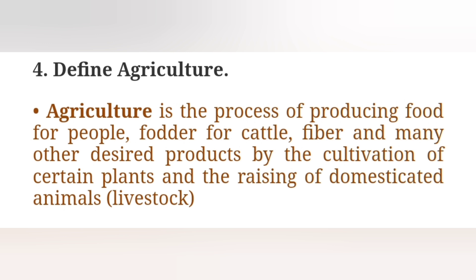Question 4: Define Agriculture. Agriculture is the process of producing food for people, fodder for cattle, fiber and many other desired products by the cultivation of certain plants and the raising of domesticated animals.